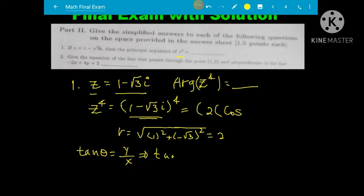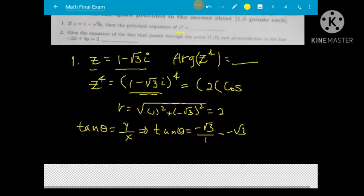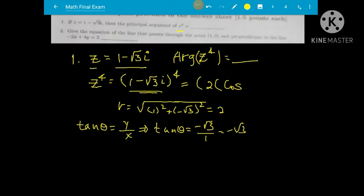The y value is negative radical 3 and the x value is 1, so theta is arctan of negative radical 3 over 1. The angle places us in the fourth quadrant, so theta equals negative pi over 3 or equivalently 5pi over 3.